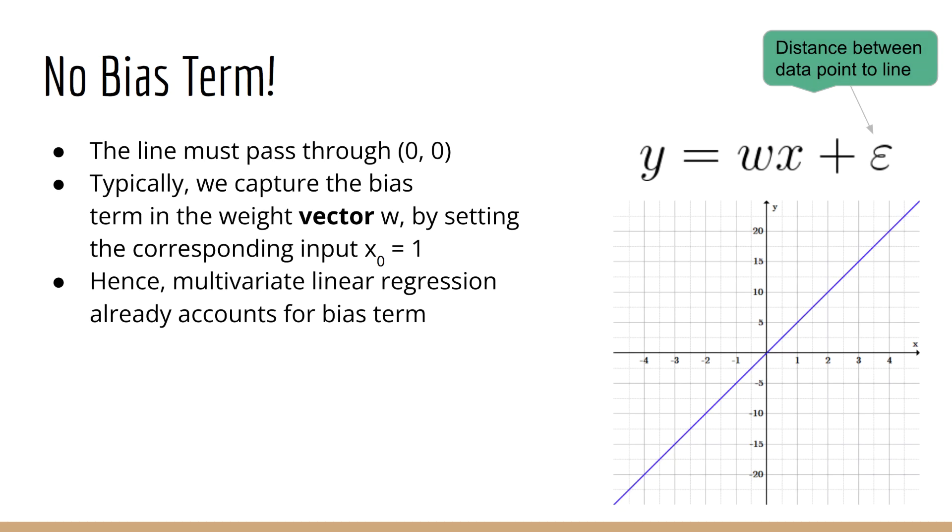As you can see, there is no bias term in this model. Of course, a bias term would make our model more flexible, since currently our line can only pass through the origin. However, recall that with linear models, we typically don't include the bias term explicitly. Instead, we just capture the bias term in the weight vector, where the corresponding input is always set to 1. As such, learning about multivariate linear regression will be sufficient to understand how to incorporate a bias term, and as you know, that will come later in the course.